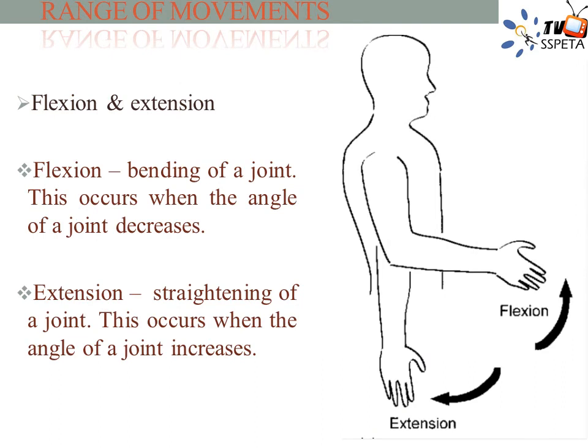Types of joint movements — there are different types of movement permitted at each joint. Flexion: bending a joint. This occurs when the angle of a joint decreases. For example, the elbow flexes when performing a biceps curl.